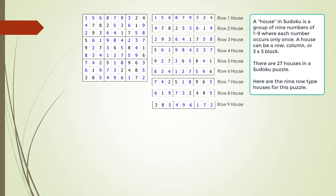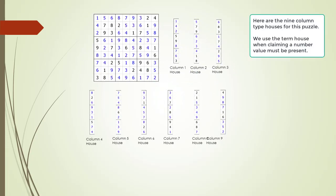A house in Sudoku is a group of numbers 1 through 9 where each number occurs only once. A house can be a row, column, or 3x3 block. There are 27 houses in a Sudoku puzzle. We use the term house when we talk about how numbers must exist in a Sudoku puzzle. We will say a cell must be the number X because the house making up row Y, column Y, or block Y must have at least one X in it.